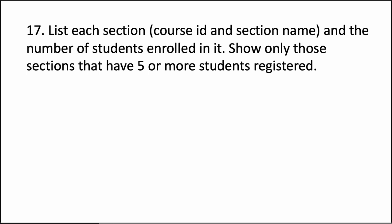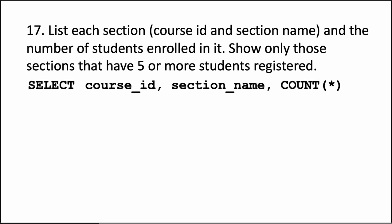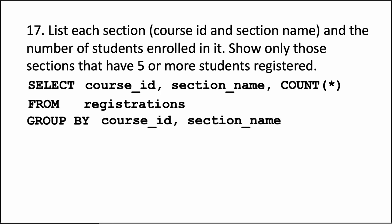WHERE clause is used only for selecting from the original table. When you are selecting from an aggregated result, you use a different clause — it's called HAVING. So we say SELECT COURSE_ID, SECTION_NAME, COUNT(*) — this is all like before — and we say FROM REGISTRATIONS, and GROUP BY COURSE_ID, SECTION_NAME. This is all exactly like before. If we stopped right here, this would list the results for every course ID and section name combination, but we don't want that. We only want those sections that have more than 5 students. You achieve that by doing HAVING COUNT(*) >= 5. So this says only those groups for which the COUNT is at least 5 — list only those.